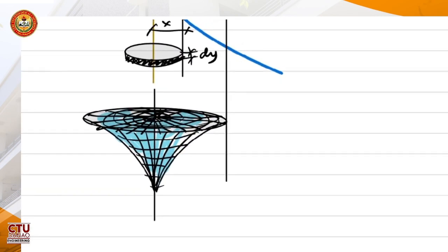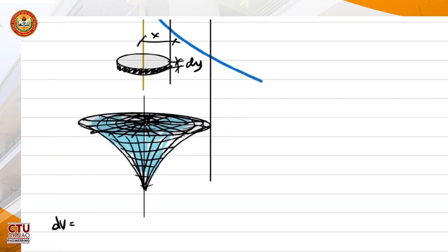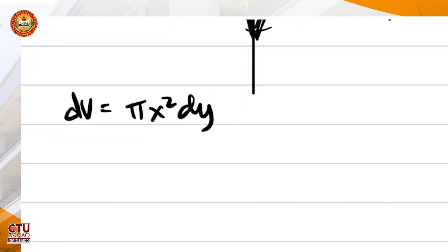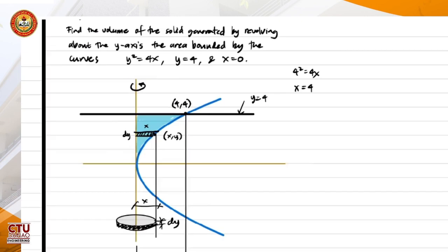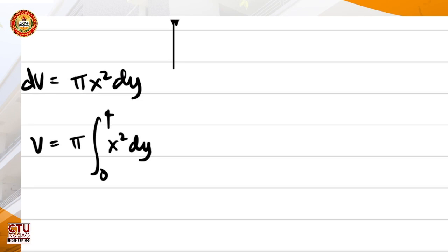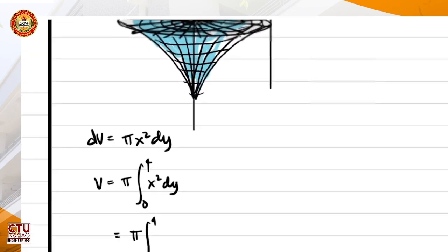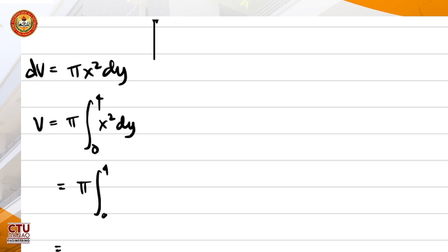So how would we compute the differential volume? Looking at this differential volume, that would just be pi x squared dy, or the area of the circle multiplied by the thickness dy. So therefore, the volume is equal to pi times integral of x squared dy from 0 to 4. So we still need to get x squared, the value of x squared.